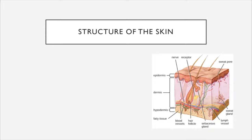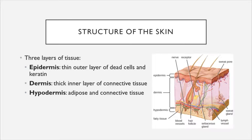We'll start by taking a look at the structure of the skin. The skin has three layers of tissue. Starting at the outermost layer is the epidermis, which is a thin layer of dead cells and keratin that resides on the outer surface of the dermis, which is the middle layer. The dermis is thicker and is comprised of connective tissue. Underneath the dermis is the hypodermis, which is composed of adipose or fat tissue as well as more connective tissue.